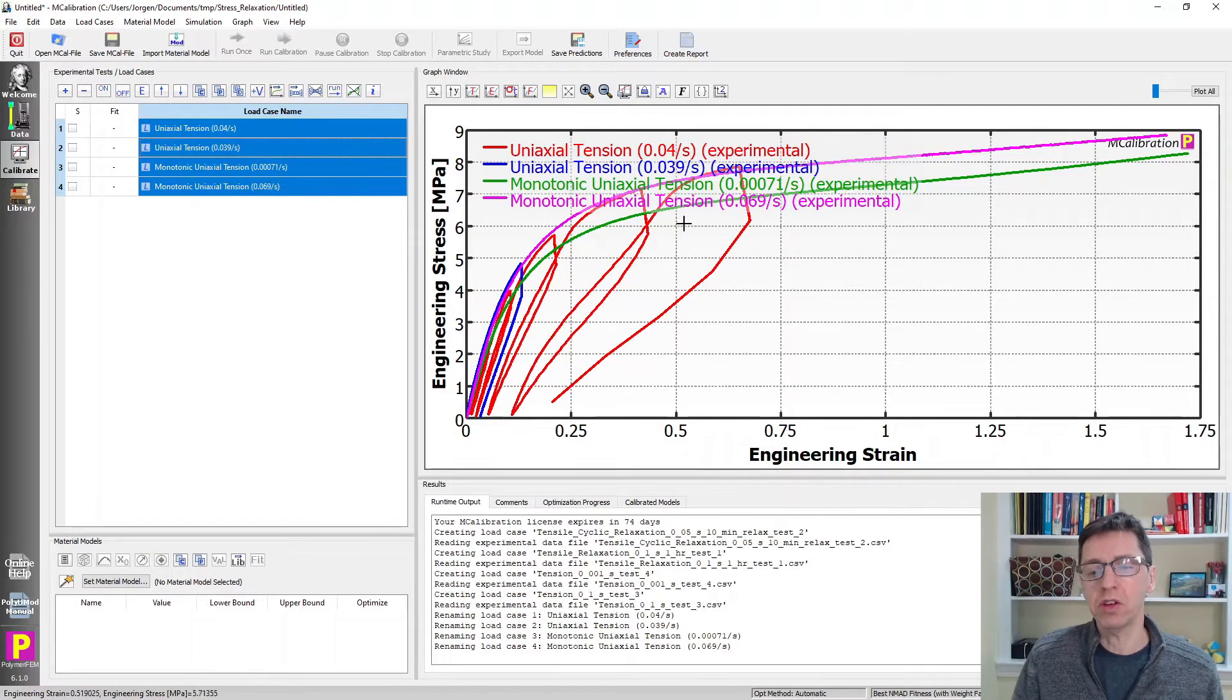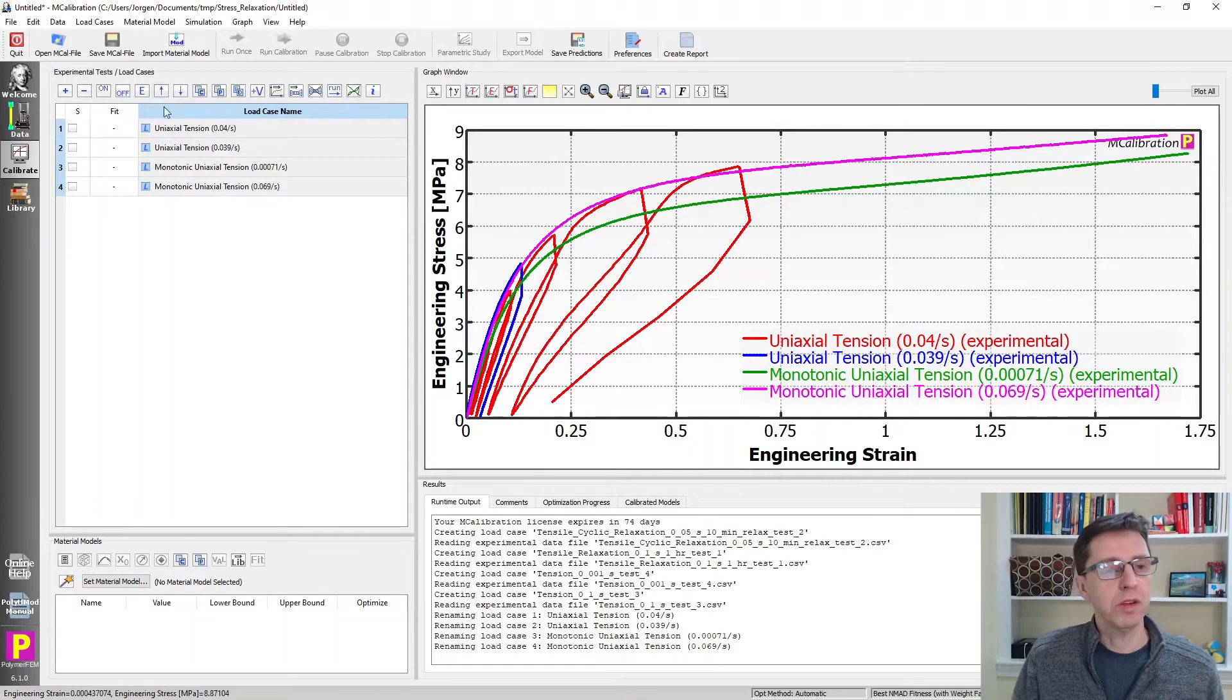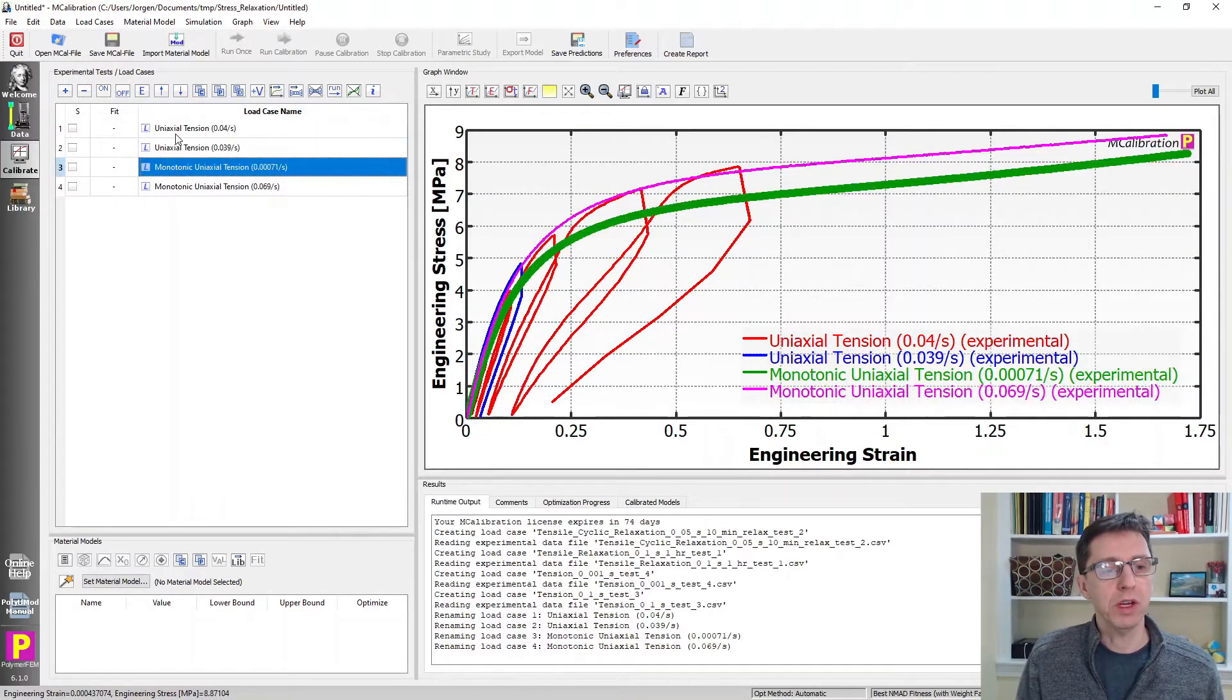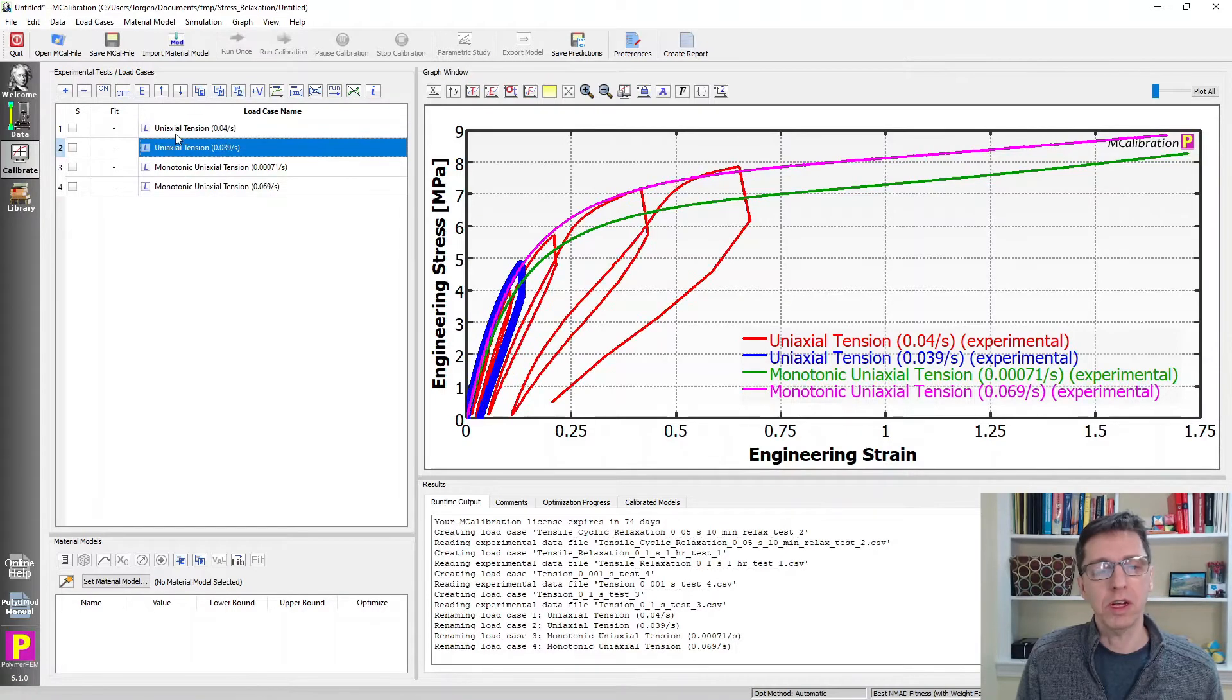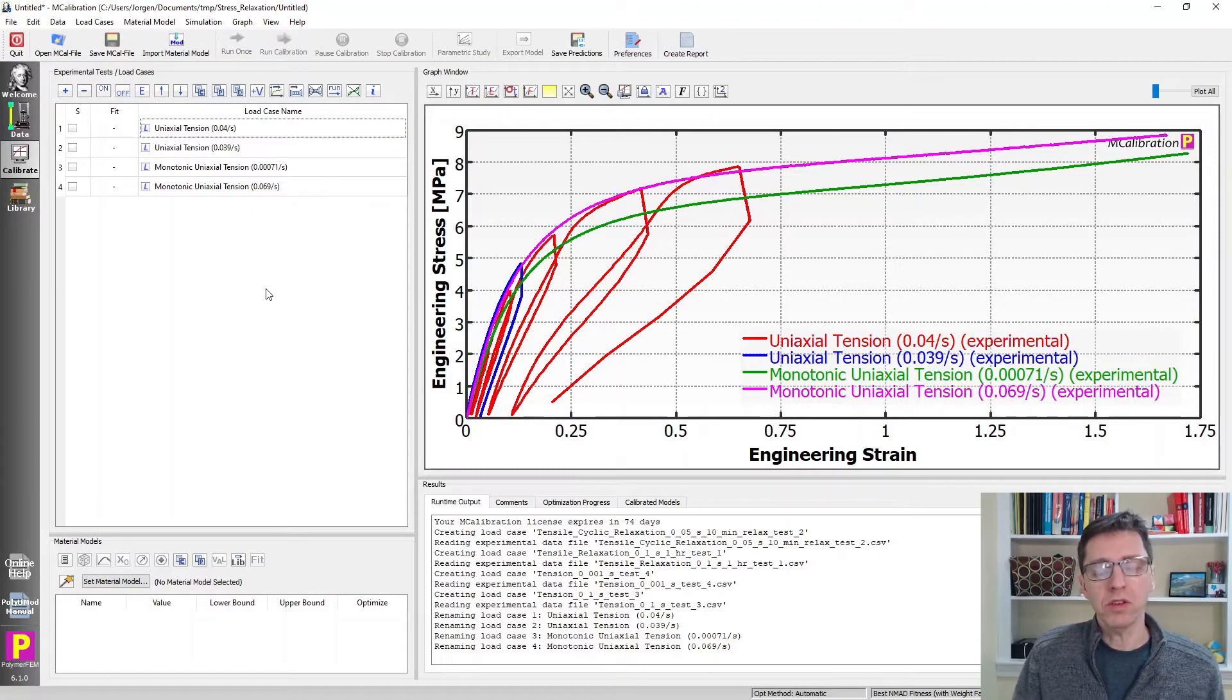So this is what the data looks like. It's kind of interesting. It seems to be two monotonic tension tests, slower and faster. Then there are two cyclic tests. One test in blue is a one-hour relaxation, and this one contains multiple relaxation segments at different strain levels. This is the data we'll work with today.